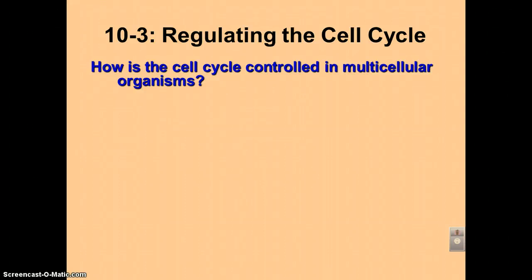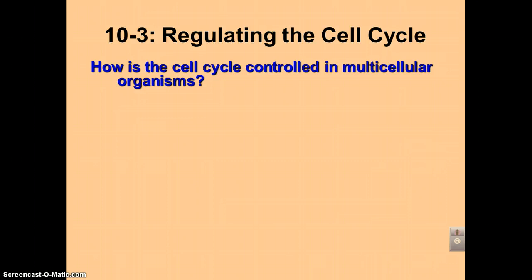In podcast number nine from chapter 10, we're going to explore how the cell cycle is controlled — in other words, how does a cell control moving in or out of the steps of interphase? So how do we go from G1 to the S phase, and how do we turn on and turn off mitosis?